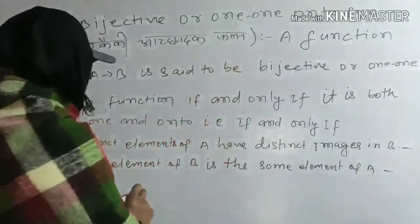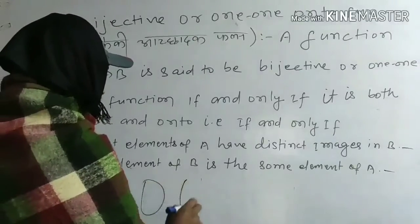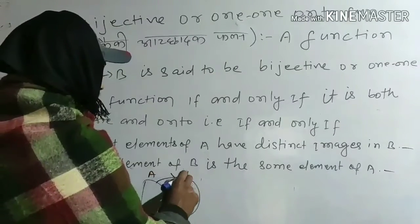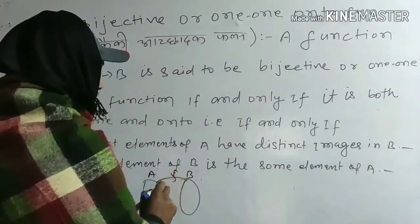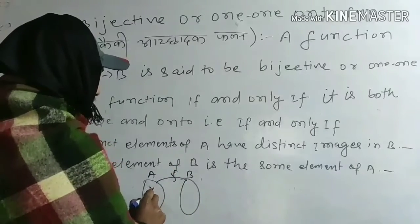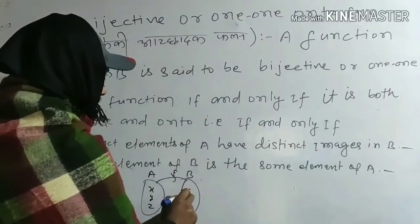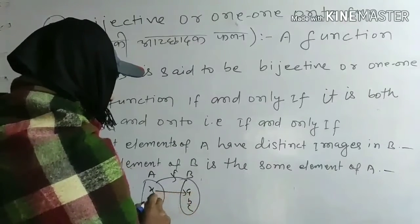For example, if you see two sets - suppose you have set A with elements X, Y, Z and set B with elements A, B, C.